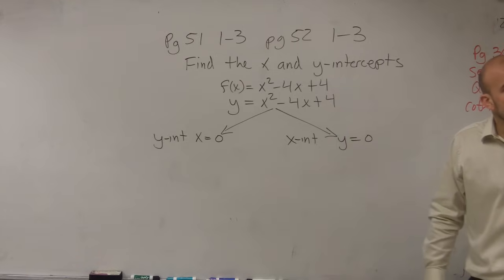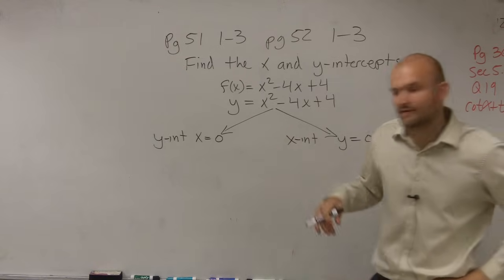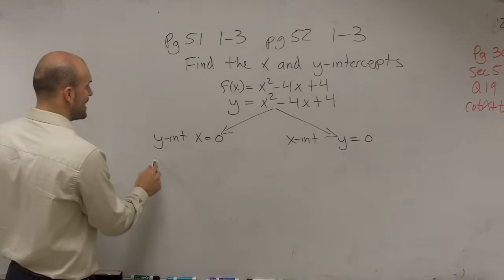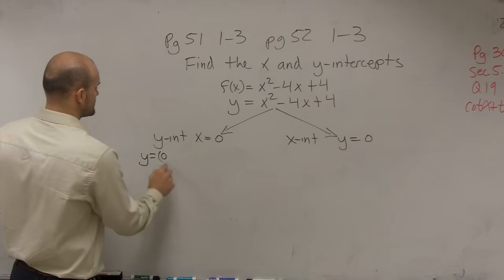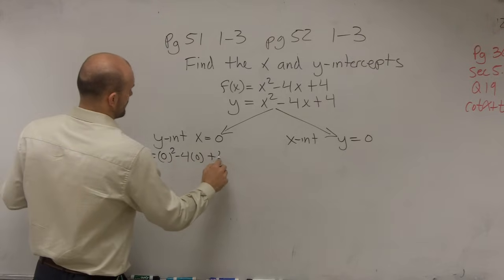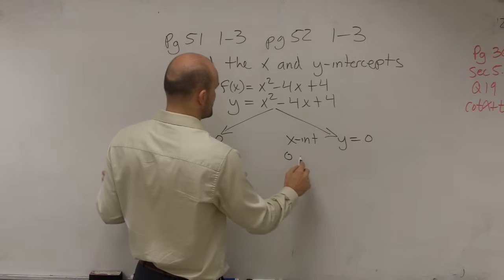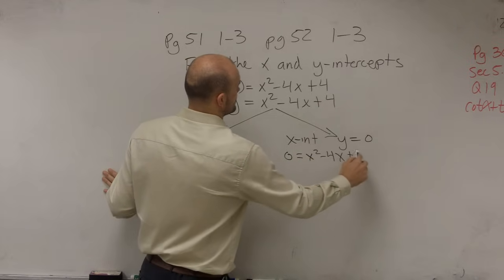OK, so all we're simply doing, the only mathematics we really now have to do is just plug in 0 for either variable. So over here, when we plug 0 in for x, we have y = 0² - 4(0) + 4. And over here, when we put 0 in for y, we have 0 = x² - 4x + 4.